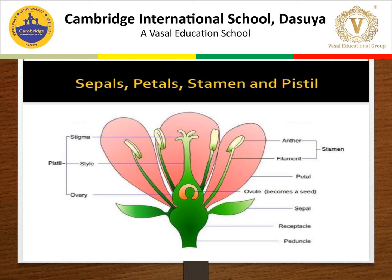Gynoecium is the female reproductive part of the flower, formed of one or more carpels located in the center of the flower. The carpel is made up of three parts: stigma, style, and ovary. Stigma is the upper part of the carpel and receives pollen grains and male gametes during pollination. Style is the long part of the carpel which connects the stigma with the ovary. The ovary is the basal part of the carpel and bears ovules. Female gametes called ovum are produced in the ovule. The ovule may be unilocular when there is only one chamber, or multilocular when there are many chambers.